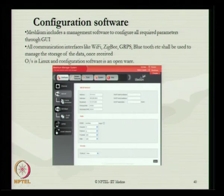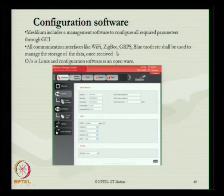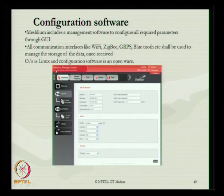For open source programming, Meshlium includes its own management software to configure all required parameters through a graphical user interface. All communication interfaces — Wi-Fi, Zigbee, GPRS, Bluetooth — shall be used to manage the storage of data once received. The operating system is preferably Linux and the configuring software is open-ware. A typical front-end GUI has been advised by Libelium.